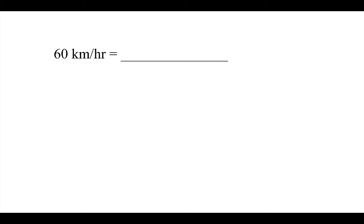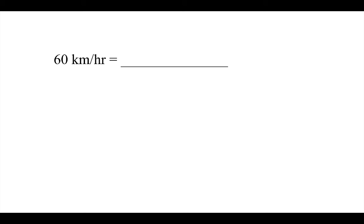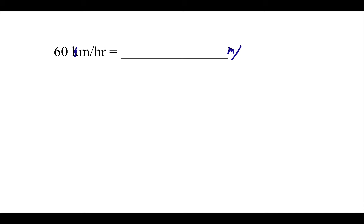Let's look at something different when we have more than one unit: 60 kilometers per hour. I need to convert this into the base units. If I get rid of the kilo prefix, I have meters. For hours, I need to convert that into seconds. So I need to convert kilometers per hour into meters per second. I can't do any decimal movements because there is no decimal movement between seconds and hours. So I'm back to dimensional analysis.